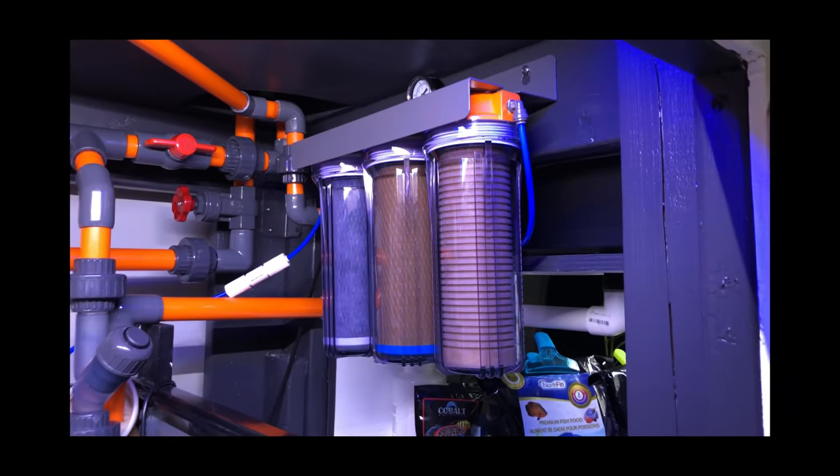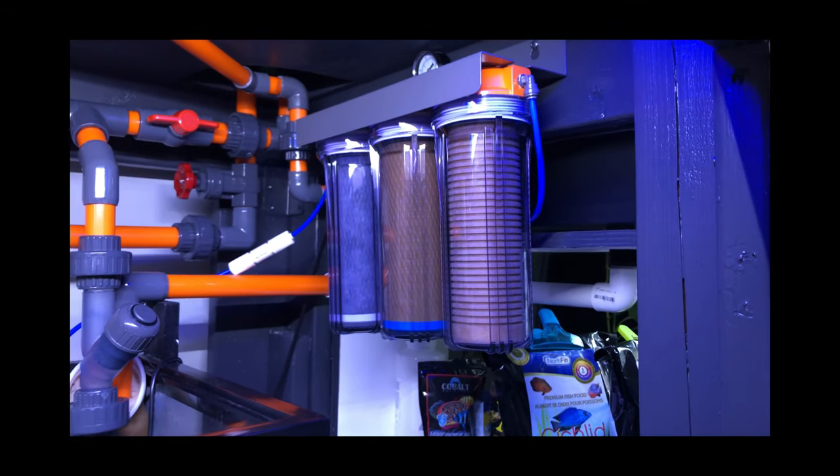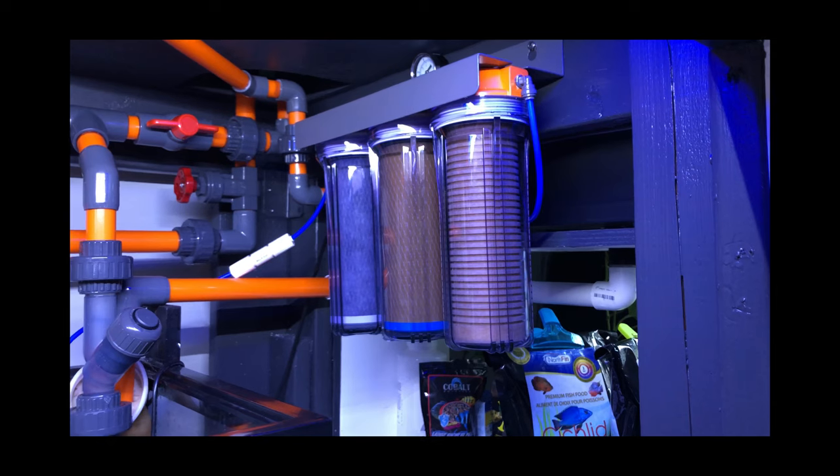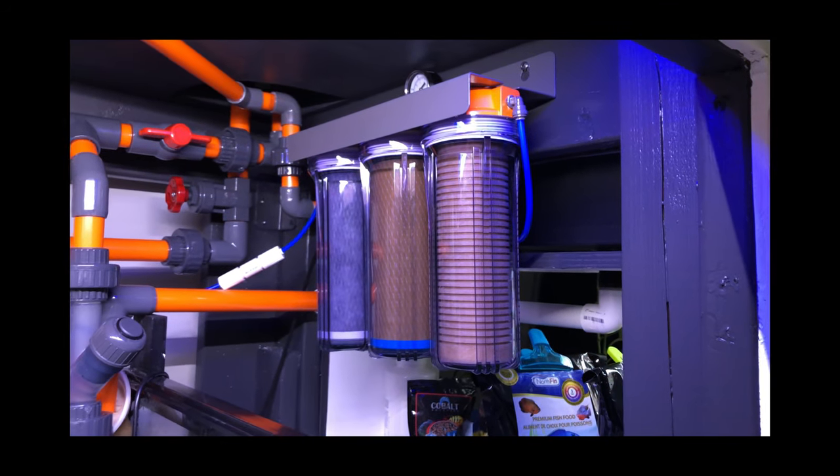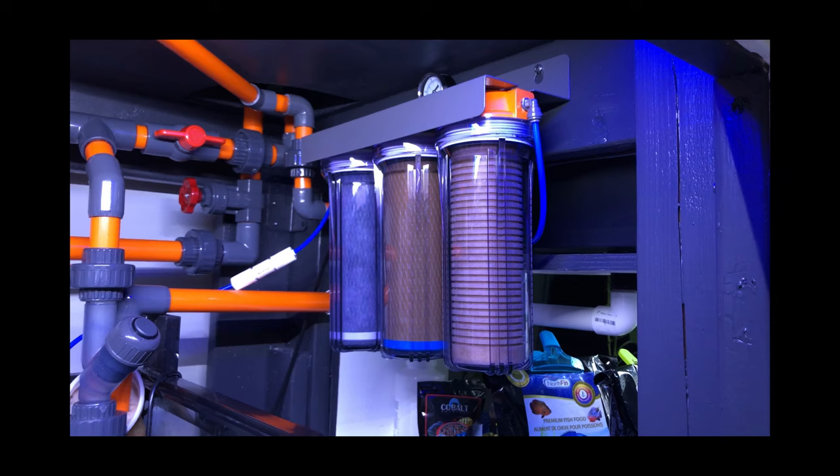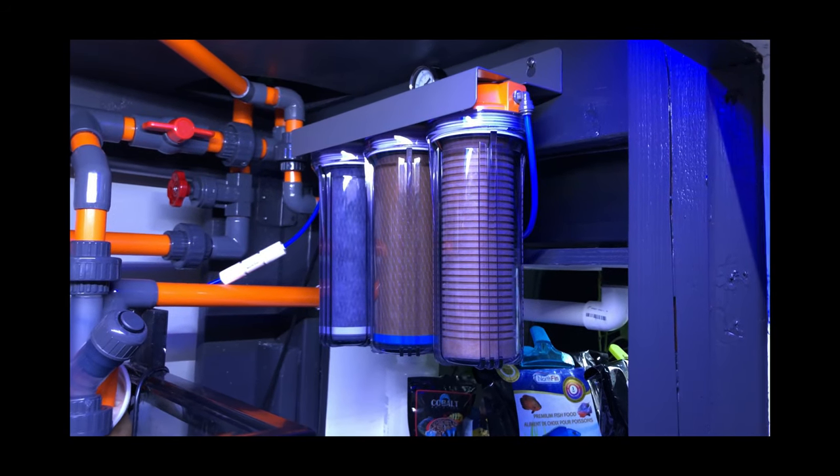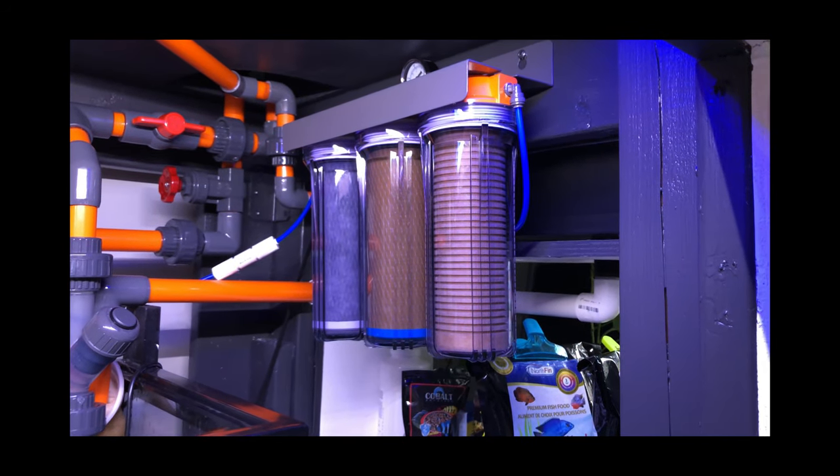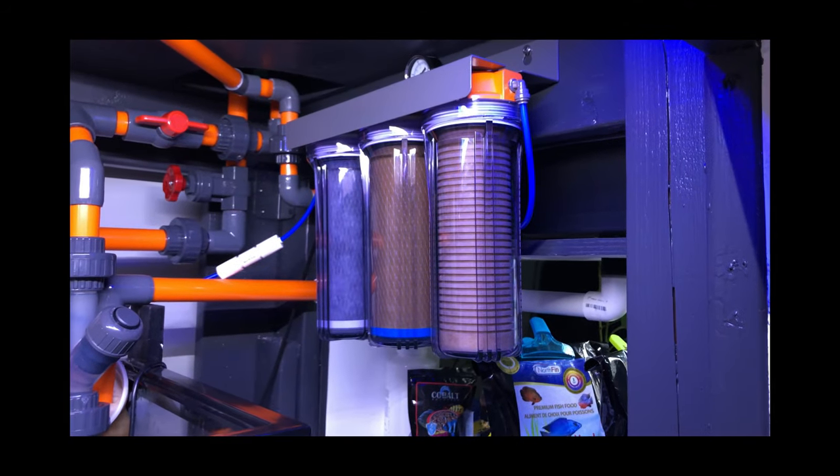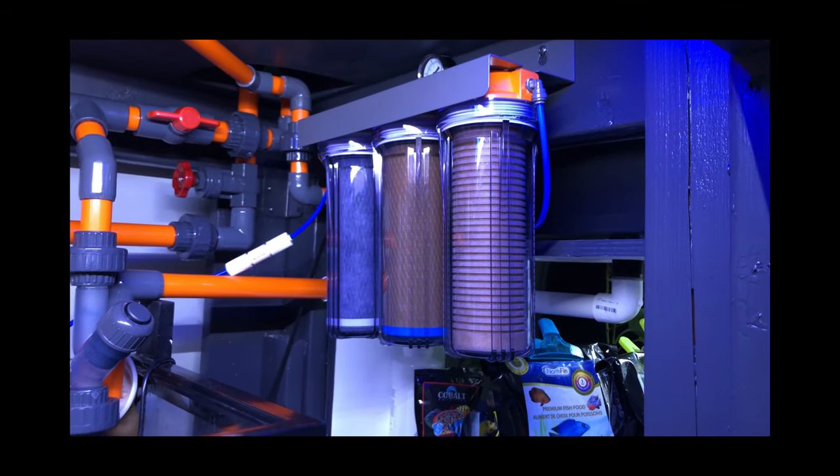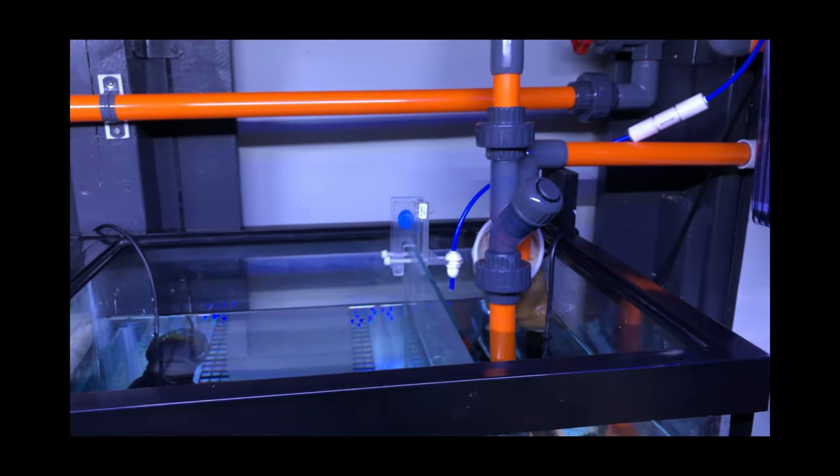This is just a regular RO type water purifier that I have. I got it off of eBay, and I put my own cartridges in there. Just different levels. First, there's a sediment filter on the right, and then different microns of carbon blocks. And, that goes into the drip system. You see the blue line there.